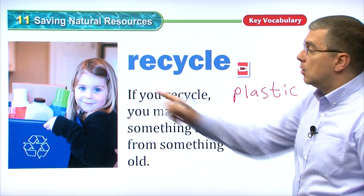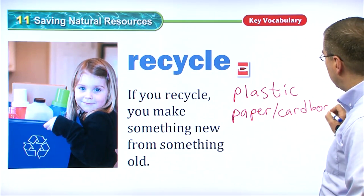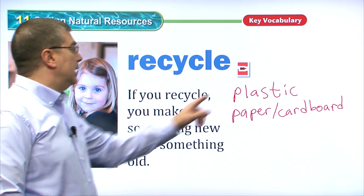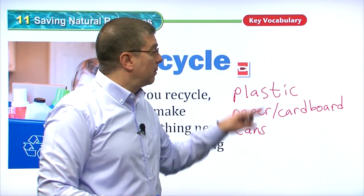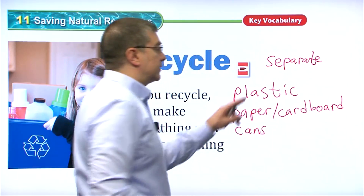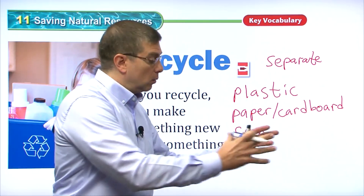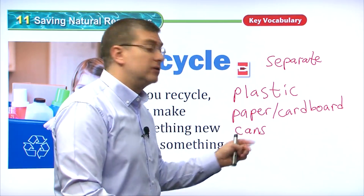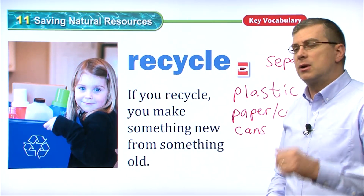We can recycle paper and cardboard — cardboard is a type of paper that's been pressed together, like a box. So: plastic, paper, cardboard, and cans. When you throw out your trash, remember to separate these items. The garbage collector will take the plastic to make something new, use the paper to make new paper, and use the cans to make new cans. To recycle is to make something new from something old.